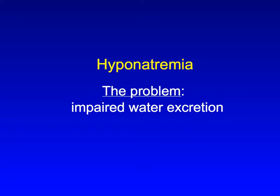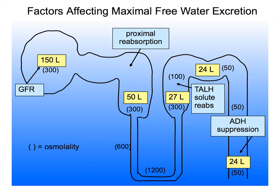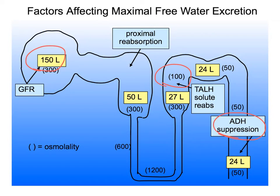In Part 1, we talked about how hyponatremia occurs because of an impaired ability to excrete water. This can be because of a limited amount of filtrate, or inability to make a maximally dilute tubular fluid in the loop of Henle, or inability to suppress ADH secretion.